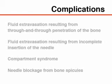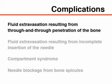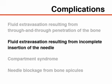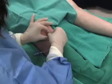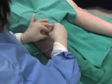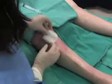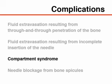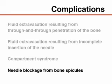The most common complication of intraosseous needle insertion is fluid extravasation resulting from through and through penetration of the bone or from incomplete insertion of the needle. If extravasation occurs, the needle should be removed and pressure should be applied to the site. Compartment syndrome is a rare but possible complication of fluid extravasation that may occur when a needle has been placed incorrectly. Bone spicules may cause blockage of the needle.